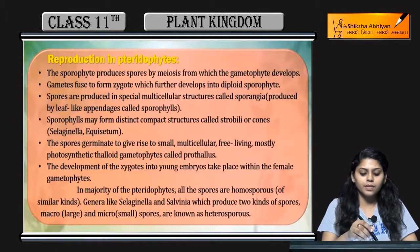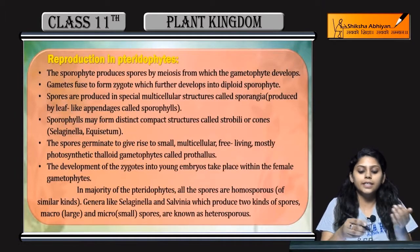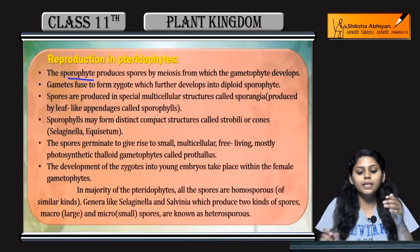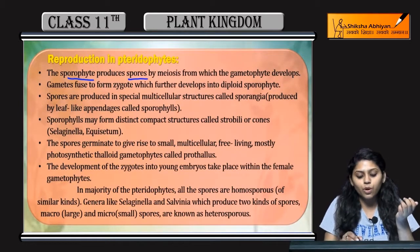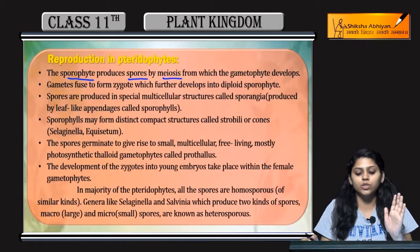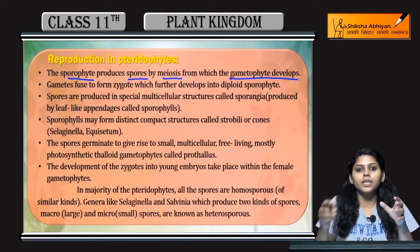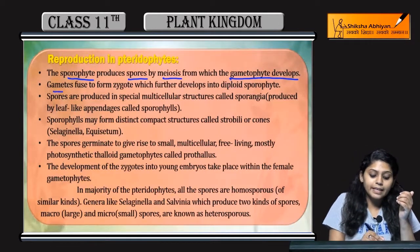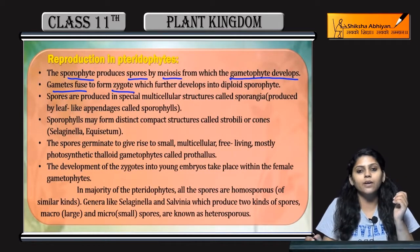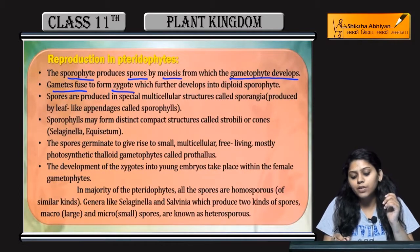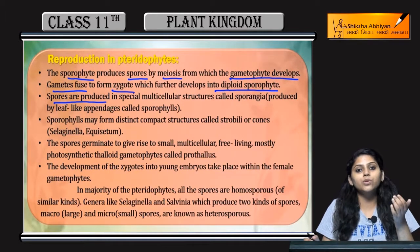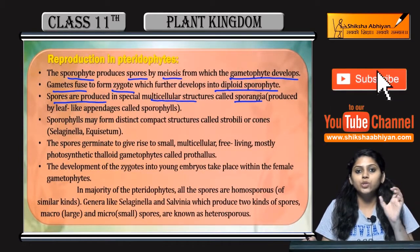Coming to the reproduction in Pteridophytes — Pteridophytes can be reproduced by the process of meiosis, from which gametophyte develops. Spores form, from spores to gametophytes, then gametes fuse and zygote forms. The zygote further develops into a diploid sporophytic plant body.